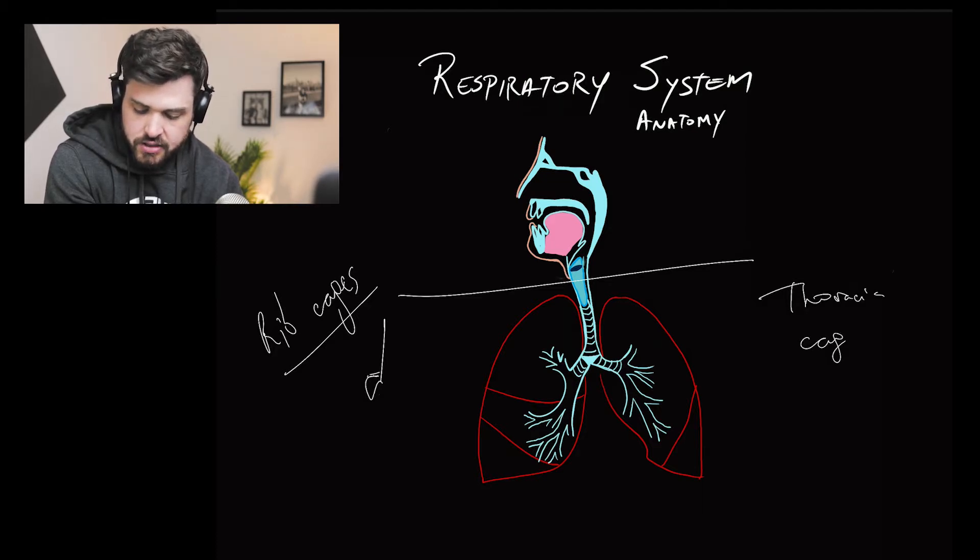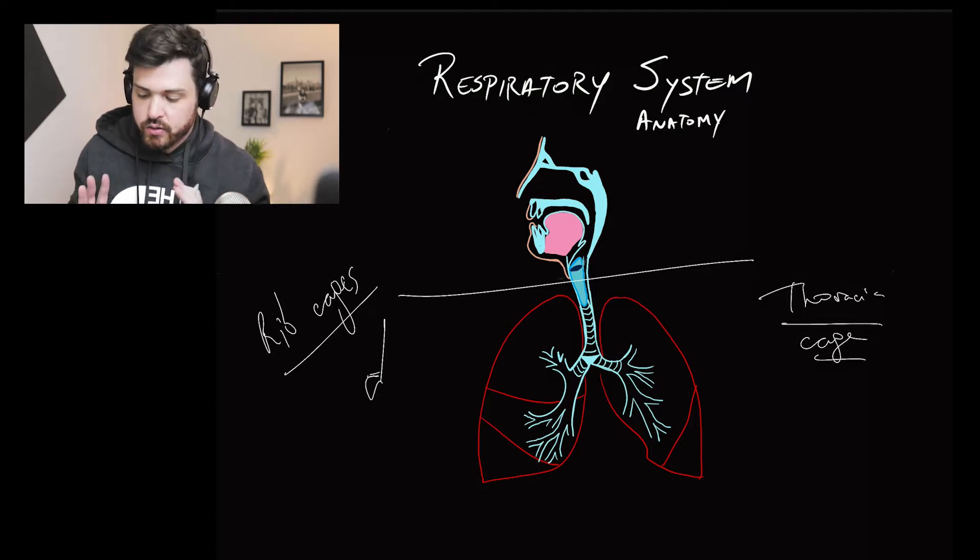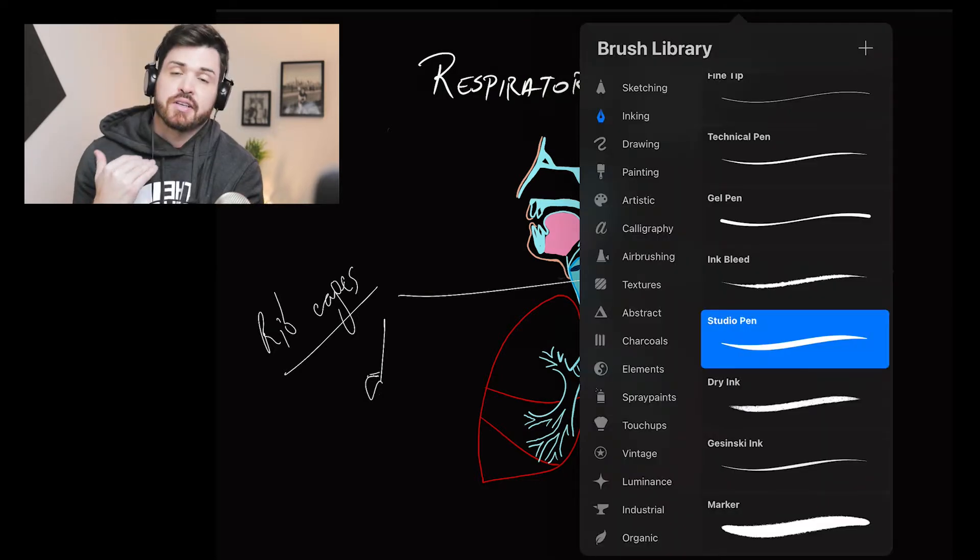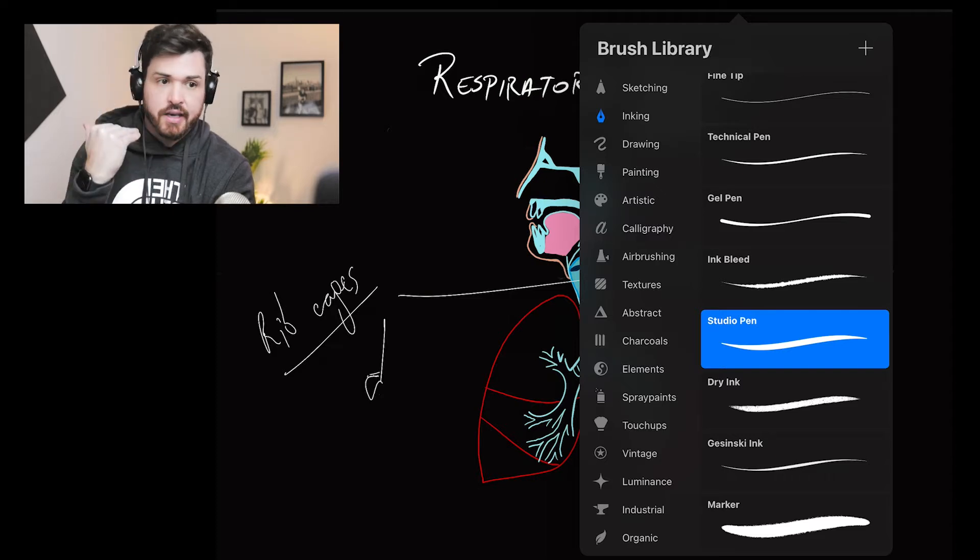The thoracic cage, que é a caixa torácica. Então tudo que está dentro da caixa torácica, praticamente é o sistema respiratório inferior. O sistema respiratório superior, the upper respiratory tract, is everything that's above the sternum and outside the thoracic cage.